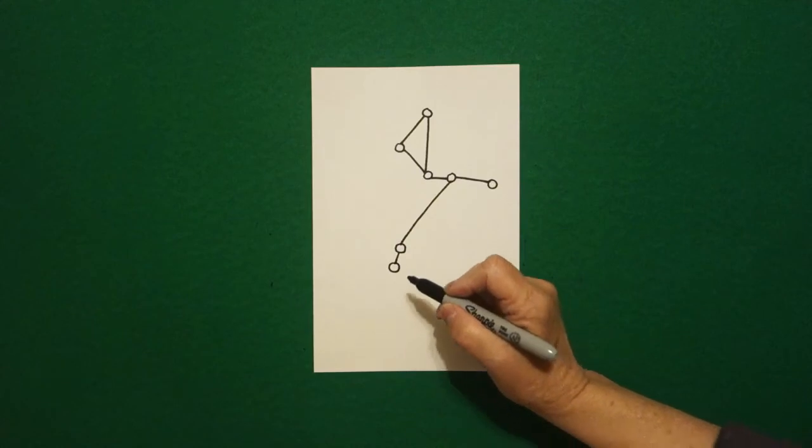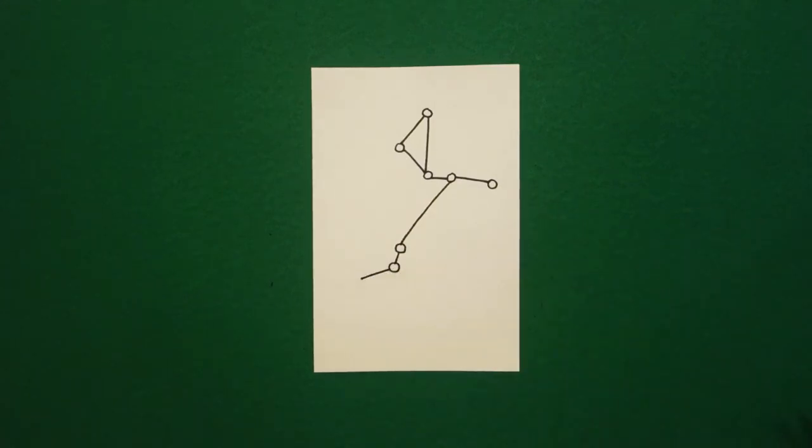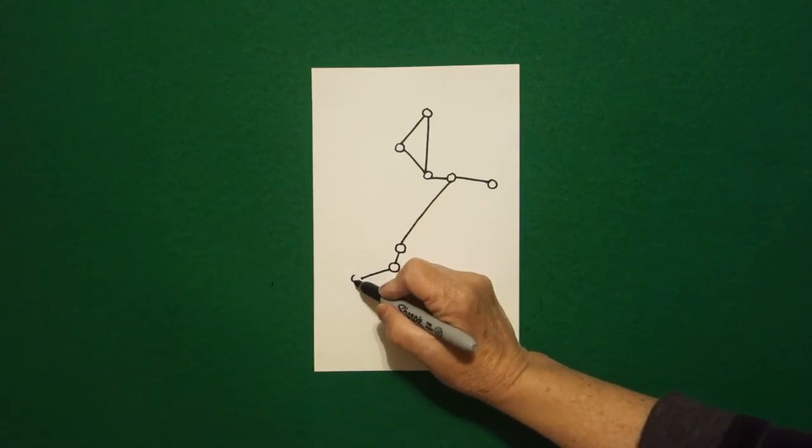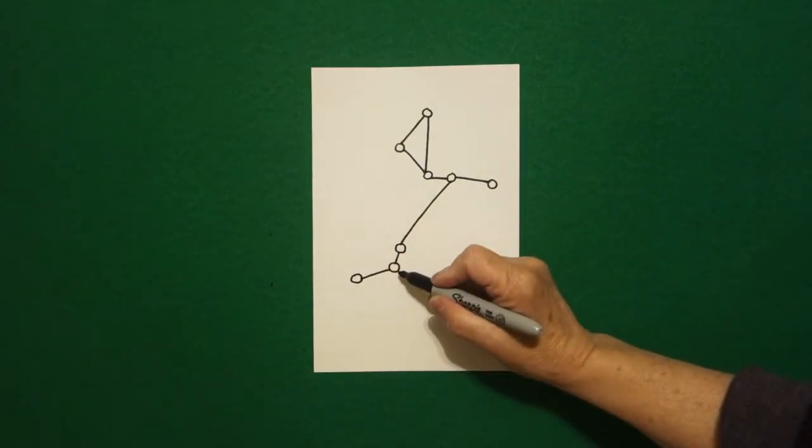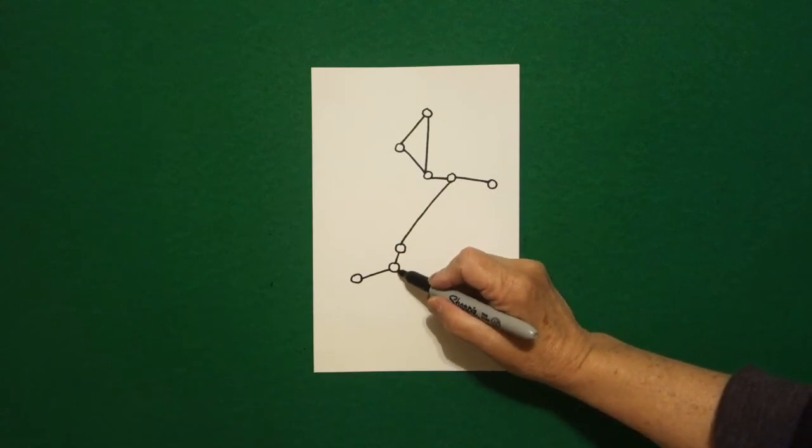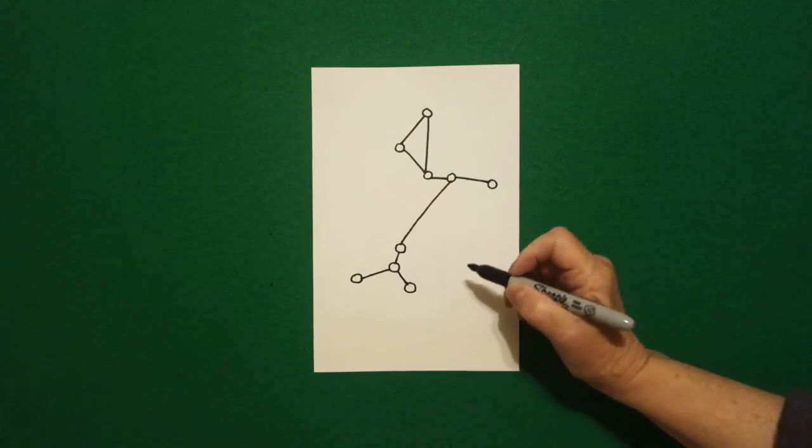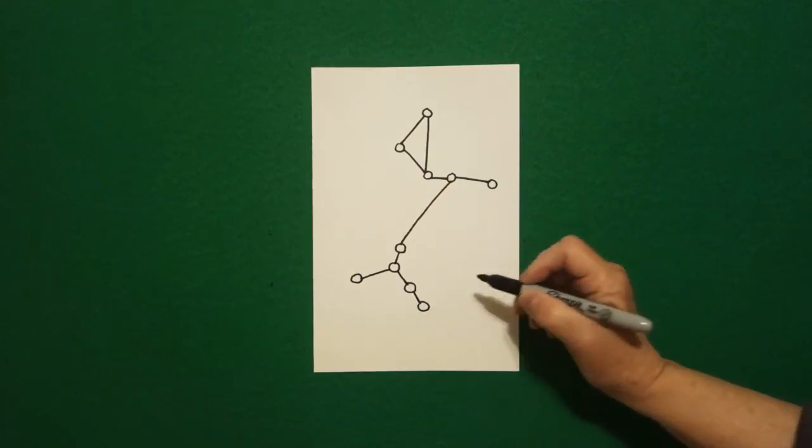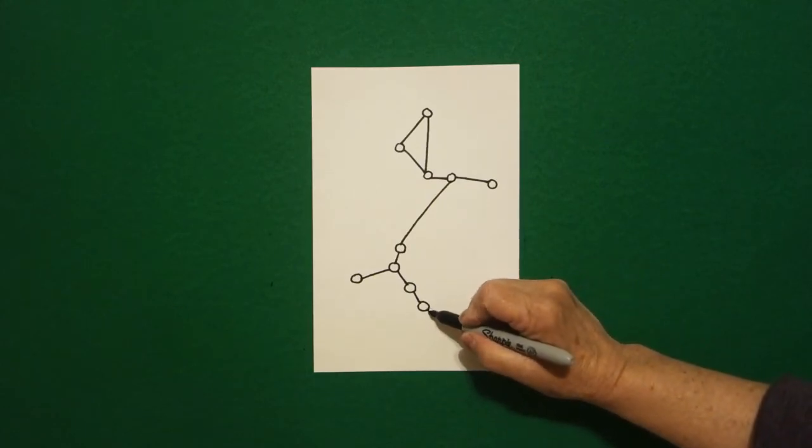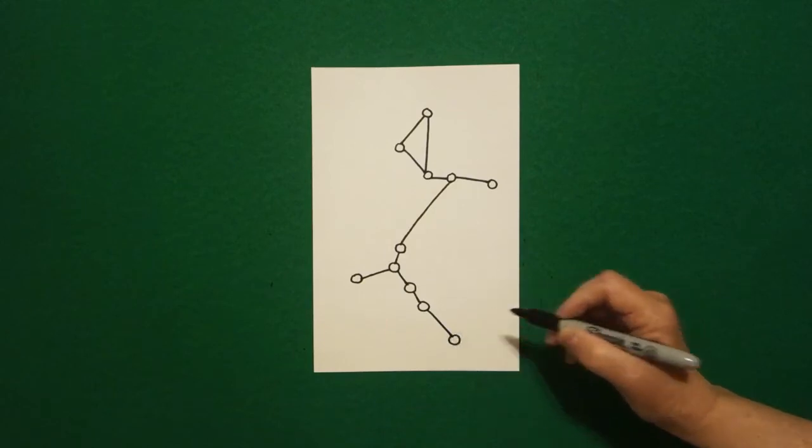From this baby circle I'm going to draw a straight diagonal line out and at the end a baby circle. I come back to this baby circle and I draw a little straight line, baby circle, little straight line, baby circle, bigger straight line out and down, baby circle.